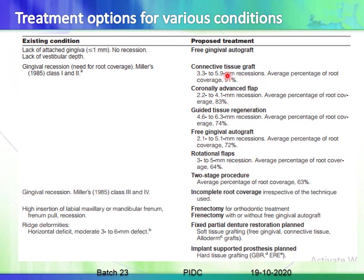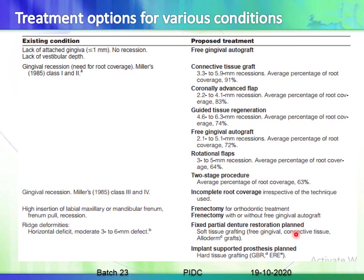For Miller's Class 3 or Class 4 recession, only incomplete root coverage is expected after surgery, regardless of the technique used. For high insertion of the labial maxillary or mandibular frenum causing recession, frenectomy is indicated, either for continuing orthodontic treatment or frenotomy with or without a free gingival graft. For ridge deformities with a horizontal ridge deficit of around 3 to 6 mm, options include soft tissue grafting — free gingival graft, connective tissue graft, or Alloderm graft — or implant-supported prostheses with hard tissue grafting and guided bone regeneration.